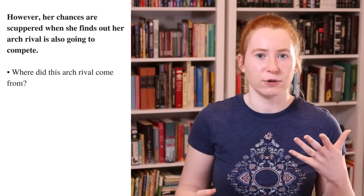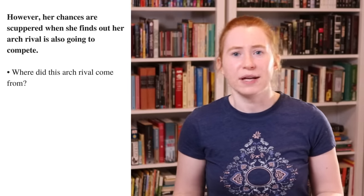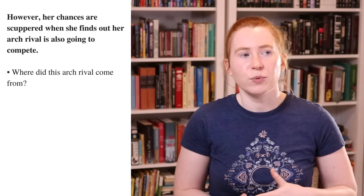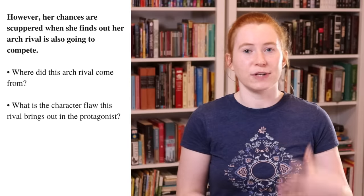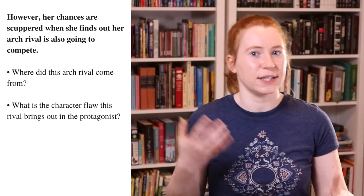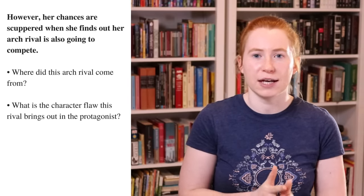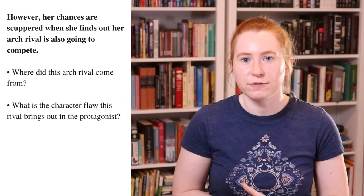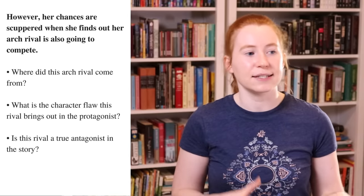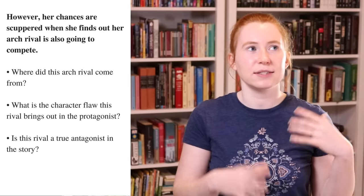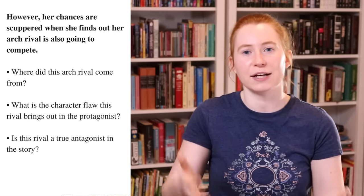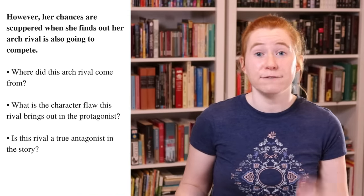The second line is: her chances are scuppered when she finds out her arch rival is also going to compete. We'd want to figure out the history of this rivalry — where did this arch rival come from, and is this a sailing rival, a romantic rival, or a baking rival? We'd also want to look at the character arc; most likely this arch rival brings out a flaw or insecurity in the main character, given that she seems to believe she can't win if this rival is participating. Lastly, is this rival truly an antagonist — actively sabotaging her — or is this someone the protagonist interprets as a rival but who isn't actually serving as the antagonist of the story?